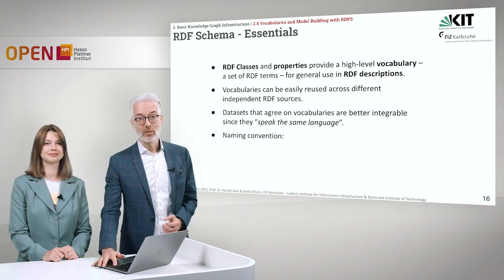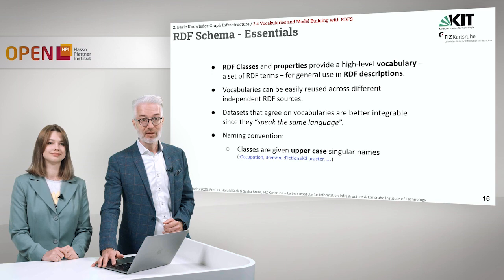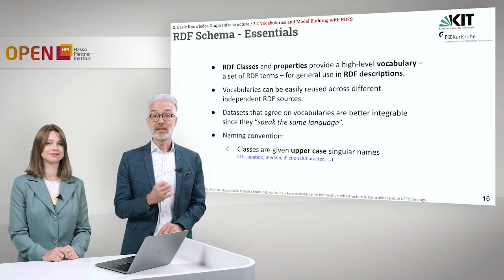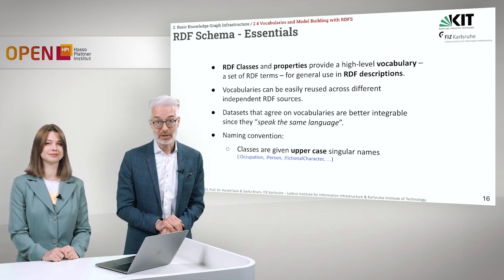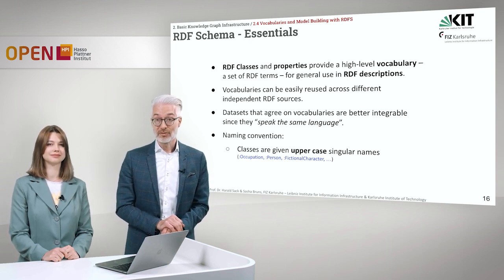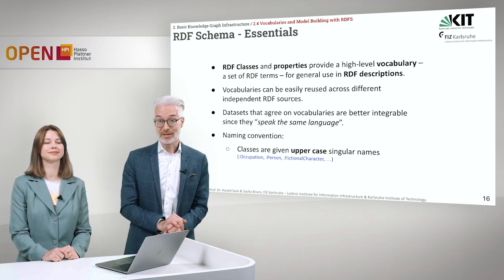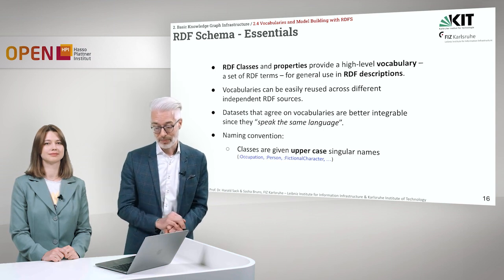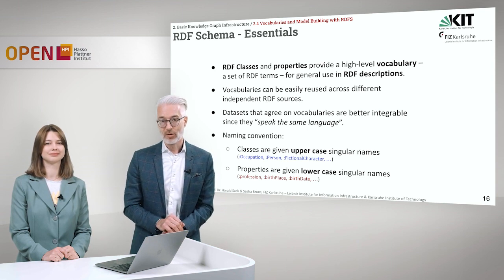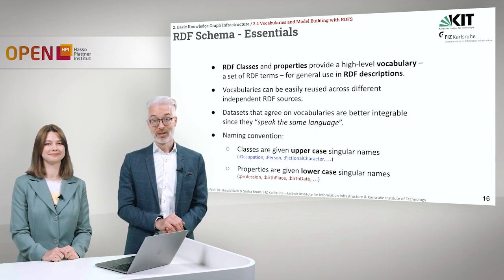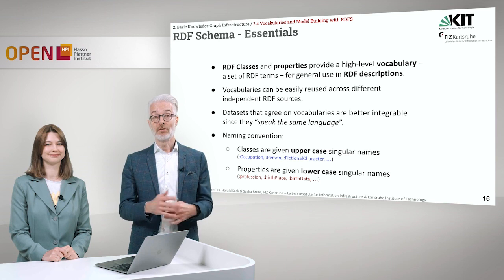To enable better reuse, there are naming conventions — best practices that have been established. Classes are usually given in UpperCamelCase singular names, like Occupation with a capital O, Person with a capital P, or FictionalCharacter with a capital F, where each component of a compound name starts with a capital letter. Properties are usually given in lowerCamelCase singular names, like profession, birthPlace, birthDate. So: classes uppercase, properties lowercase — this makes it much easier to read longer RDF descriptions.